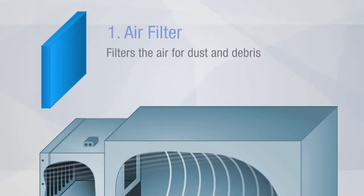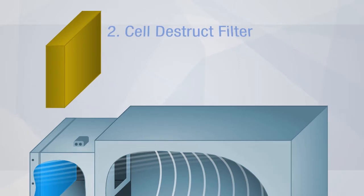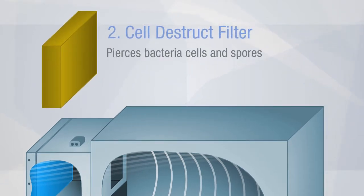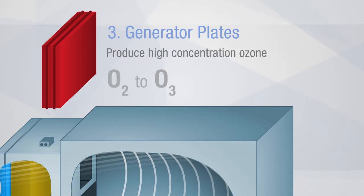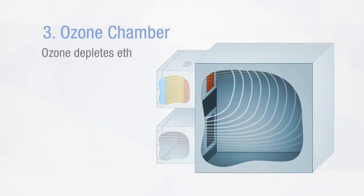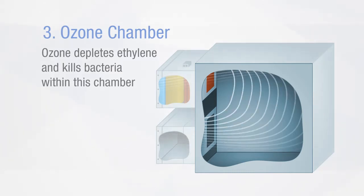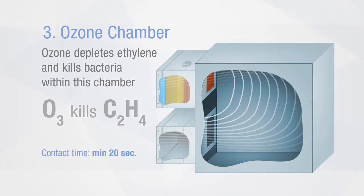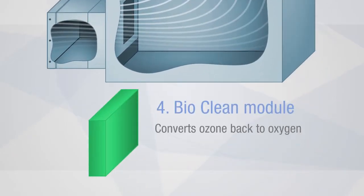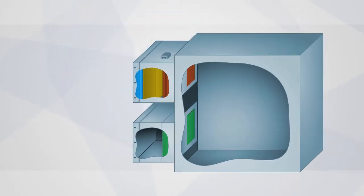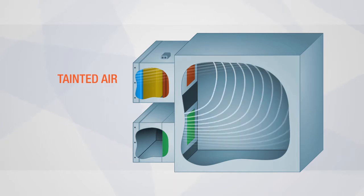In the first stage we filter the air for general dust and debris. In the second stage we use what we call a cell destruct filter — it basically pierces bacteria cells and can be especially helpful with spores. In the third stage we create high concentrations of ozone housed in a chamber. Keep in mind that ozone will never leave the chamber; we just want to expose the air to high-intensity ozone to deplete the ethylene and eliminate airborne bacteria. Contact time is a minimum of twenty seconds in this chamber. In the fourth and final stage, the ozonated air moves over a catalyst that disrupts the ozone, turning it back into regular oxygen, leaving ethylene- and bacteria-free air to be sent back into the room.